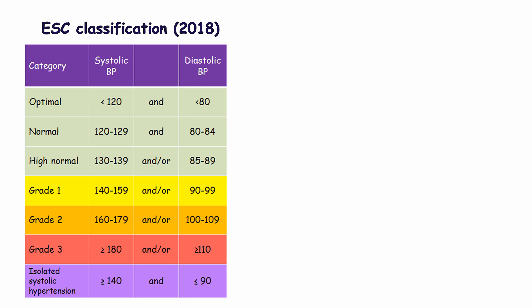There are differences in the definition of hypertension between the European Society of Cardiology and the American College of Cardiology. According to the European Society of Cardiology, blood pressure is classified as optimal, normal, high normal, grade 1, grade 2, grade 3 hypertension, and isolated systolic hypertension. Optimal blood pressure means less than 120/80 mmHg. Hypertension is diagnosed if blood pressure is 140/90 mmHg or more on two or more occasions.